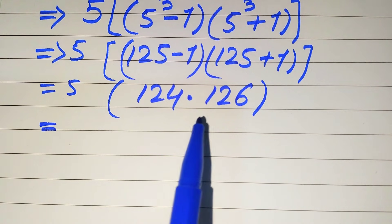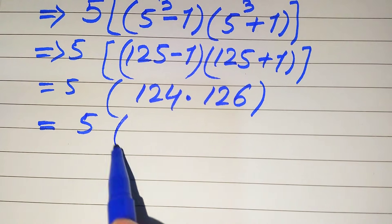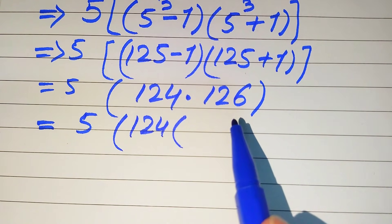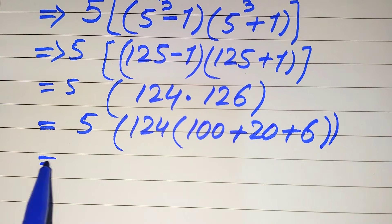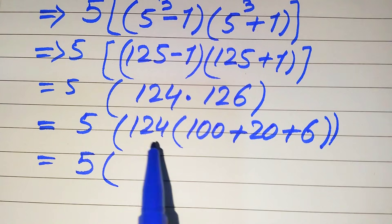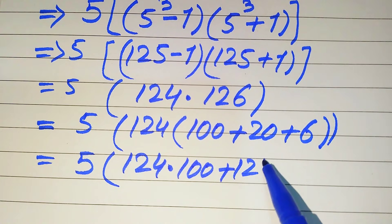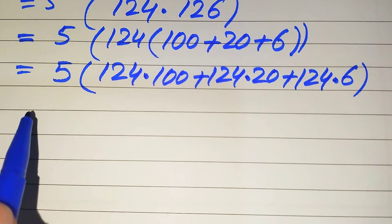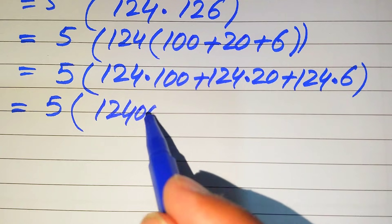Since the calculator is not allowed, we need to multiply these larger numbers manually. Here is a smart method to multiply bigger numbers without a calculator. We break 126 into hundreds and tens form: 100 plus 20 plus 6. We then distribute 124 across each part: 124 times 100, plus 124 times 20, plus 124 times 6.